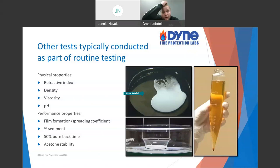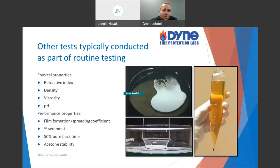Film-forming foams are obviously under some scrutiny. To get this film, you need a very low surface tension or a very positive spreading coefficient. To achieve that, unfortunately, you do need fluorochemicals — at least to date. I'm not aware of any non-fluorochemical-based surfactants that will achieve a low enough surface tension to form a film. This does rule out our synthetic fluorine-free foams (SFFFs), which aren't going to form a film.